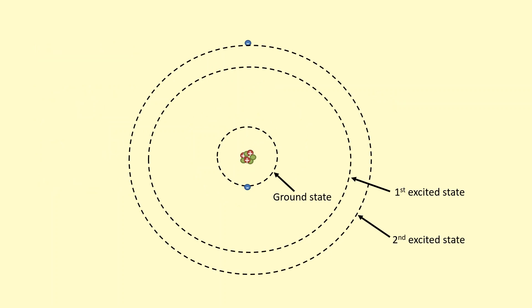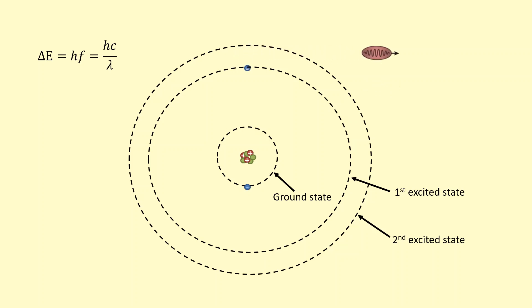Most atoms have more than just two energy levels. For example, in this case there are three energy levels, and an electron that's been excited can de-excite in many different ways. One way is to go straight down to the ground state, emitting a purple photon with energy corresponding to that large energy gap. Alternatively, it could go down in stages — from the second to the first excited energy level, emitting a red photon, which is a small gap corresponding to a small energy, longer wavelength and low frequency. Then it can de-excite from the first excited state to the ground state, emitting a blue photon — higher energy than the red, but not as high as the direct violet transition.